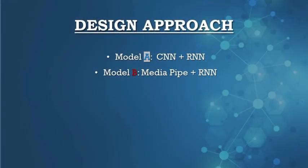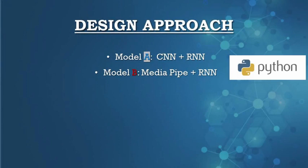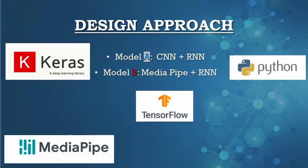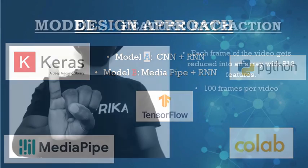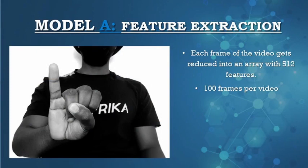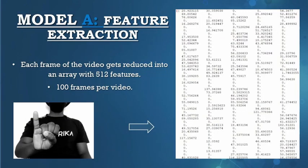Two models were created using libraries such as Python, Keras, TensorFlow, MediaPipe, and Google Colab. The first model makes use of a CNN to extract 512 features from each frame of the videos. And those features are then used to train an LSTM model.